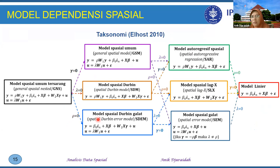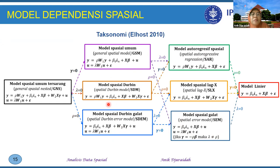Kalau kita lihat kembali model dependensi spasial, taksonomi Elhos ini, ada model yang punya dependensi pada dua peubah. Jadi bisa di Y, bisa di Y dan epsilon (galat), bisa di X dan Y, bisa juga di X dan galat. Kemudian kalau model yang hanya satu dependensi, bisa dibayangkan kalau modelnya punya dependensi lebih dari satu — efeknya mungkin bisa lebih besar atau bisa juga tidak, karena nanti kita lihat dari efek marginalnya.